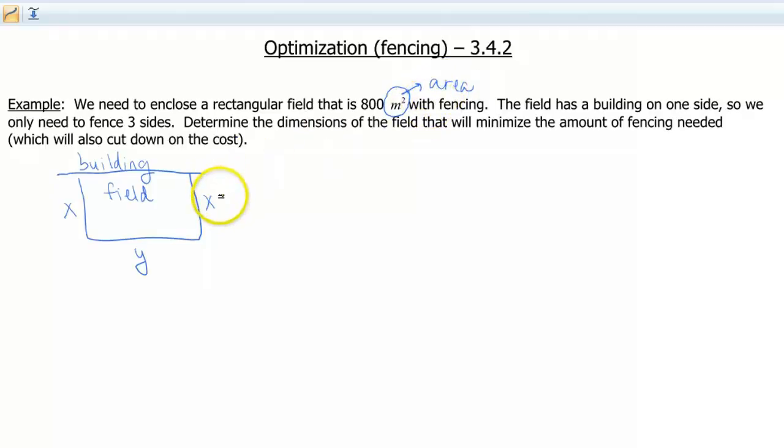So how do we find the area of a rectangle? Well, that's length times width, or base times height. So in this case, with my drawing, it's x times y, and we know that that's gotta equal 800.